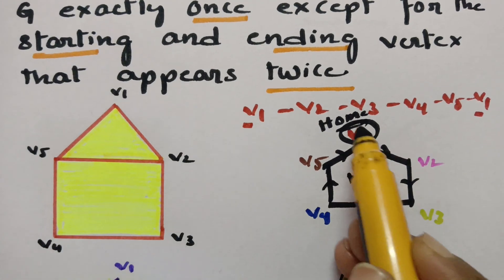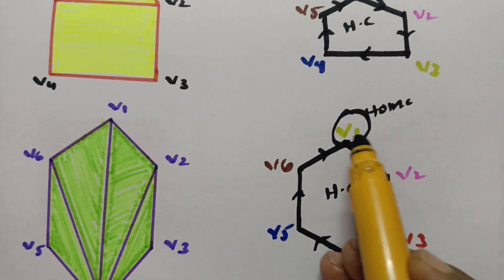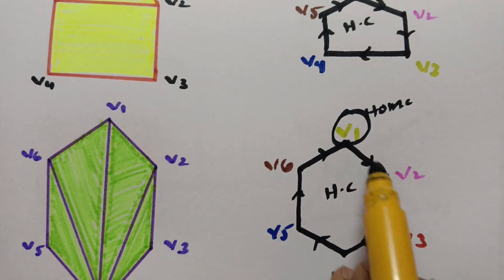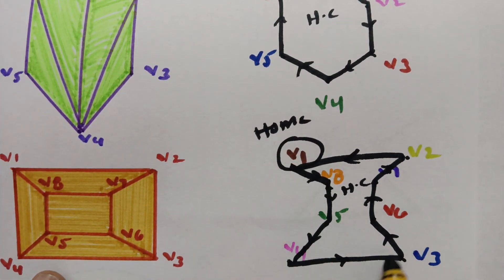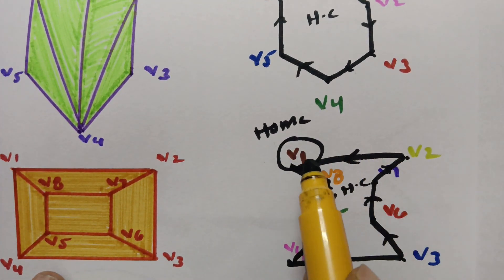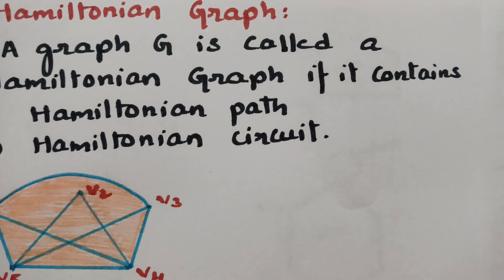The circuit is a closed figure that crosses all the vertices exactly once and returns to the same starting vertex. Starting and ending vertex should be the same. So this is the closed circuit. If you understand these two concepts — Hamiltonian path and Hamiltonian circuit — then the Hamiltonian graph is easy. A graph is called a Hamiltonian graph if it contains a Hamiltonian path and a Hamiltonian circuit.